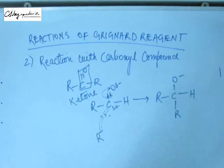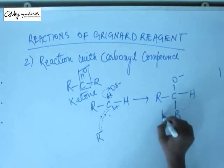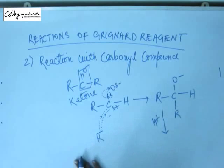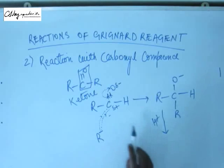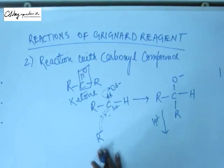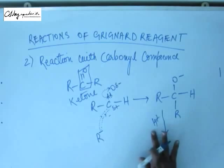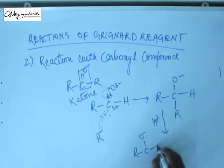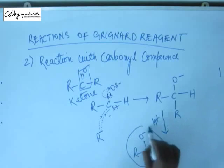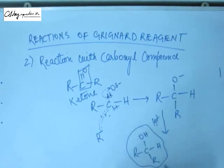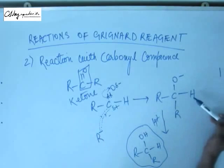The negative charge remains on O⁻ until we add H⁺ from an external source. We cannot add H⁺ before the reaction is complete, because the Grignard reagent would react with H⁺ instead of the carbonyl group. So whenever you have a nucleophilic reagent like a Grignard reagent, you do not add H⁺ at the beginning. You allow the reaction to complete, then add H⁺ at the end to neutralize the alkoxide anion, giving the final neutral alcohol product.